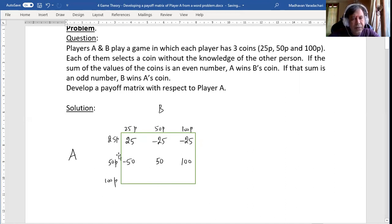Here, 100 plus 25, it is 125. 125 is an odd number. Odd number means B receives or B wins A's coin. A's coin is 100 and B is going to win that. That means A is going to lose 100 paise.